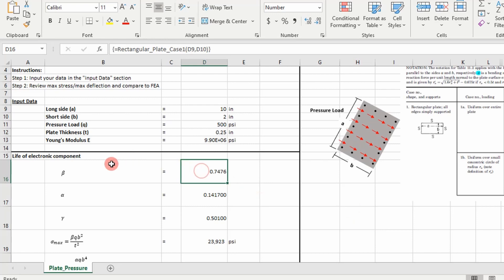So let's go ahead and step into the code to see how we got our beta, alpha, and gamma from this table.